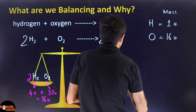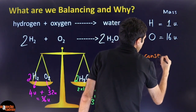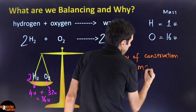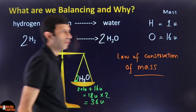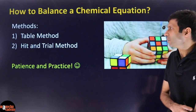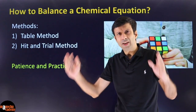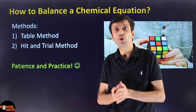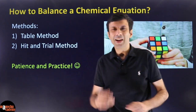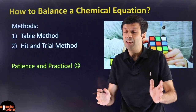So we balance chemical equations to obey the law of conservation of mass. There are two methods we'll discuss: the systematic table method — neat, clean, and advisable for difficult equations — and the fast hit-and-trial method, where you don't have to make a table, saving time. We'll learn both methods and see which ones to use.